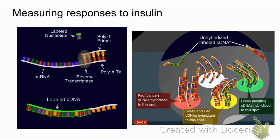When hybridization occurs, the cDNAs bind to probes on the chip that are specific for various genes. For example, in this image, some probes show no cDNA binding at all. On the right-hand side, probes are being bound by cDNAs from the green sample, which in this case represents a healthy sample. On the far left, cDNAs from cancer samples are binding to those probes.